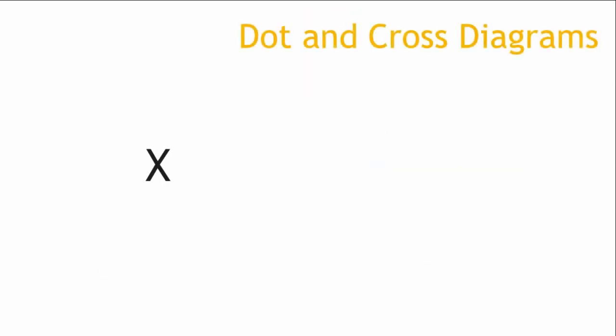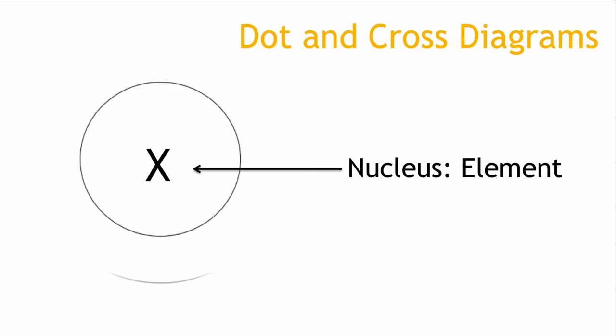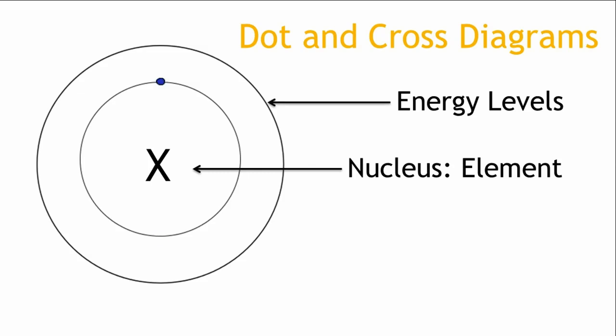In the diagram, the nucleus is represented by the element symbol, or a central black dot. The energy levels are represented by circles around the nucleus, and the electrons are represented by dots or crosses.